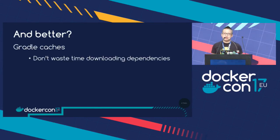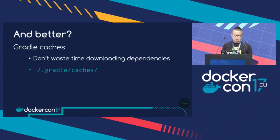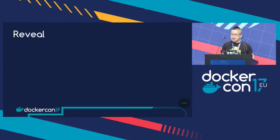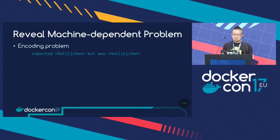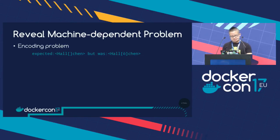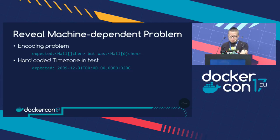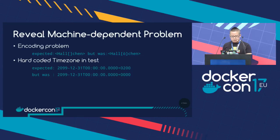Gradle caches: Gradle fetches all third-party dependency libraries, so persist them — they live in the user directory under gradle/caches — to avoid re-downloading dependencies every time. Persisting caches also helps reveal machine-dependent problems. For example, encoding issues: unit tests may not be saved in correct UTF-8 format, causing umlauts to go missing. Hard-coded time zones can cause failures — my team uses UTC+2 in Berlin. File paths are also OS-dependent and can cause issues.